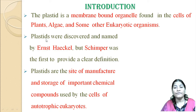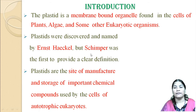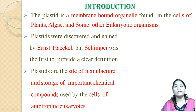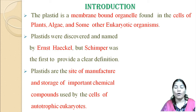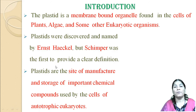These plastids were discovered and named by Ernst Haeckel and Schimper. Ernst Haeckel discovered the plastid, but Schimper was the first to provide a clear definition of plastid.